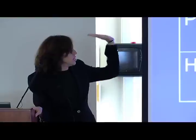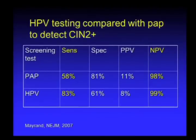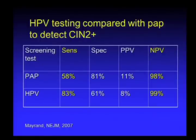Numerous studies have looked at HPV testing versus pap testing for detection of CIN 2 plus as a cervical cancer precursor. The pap test cutoff is a high-grade result, making comparison tricky. The bottom line is that HPV testing sensitivity is much better—some studies put it above 83%—but specificity and positive predictive value are much poorer. This gives some sense of the trade-offs between HPV testing and the pap test.